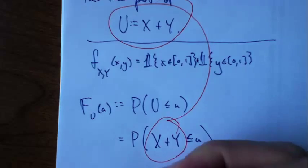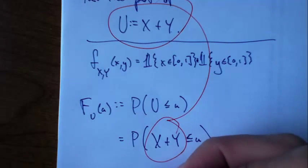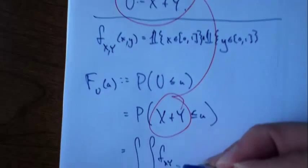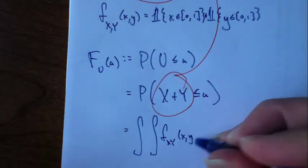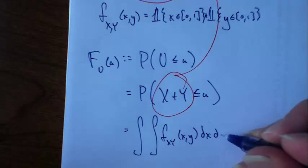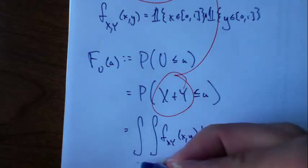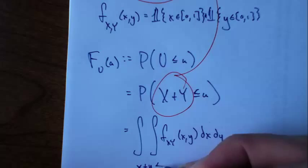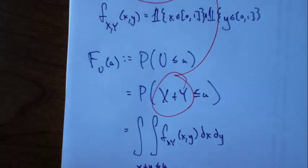There are several ways you can proceed now. I'm just going to say it's the integral of the joint density function, overall values of x and y, such that x plus y is less or equal to u.